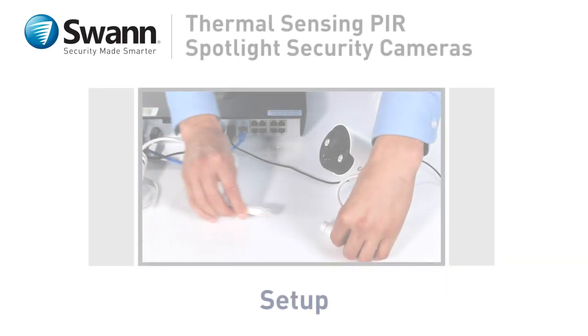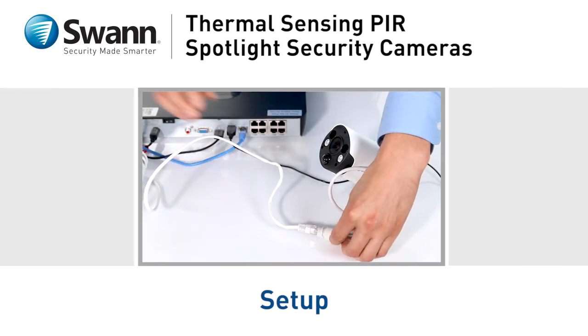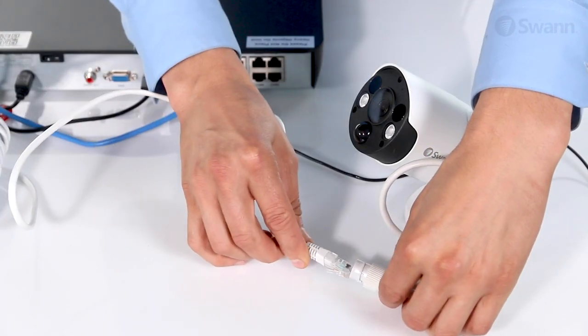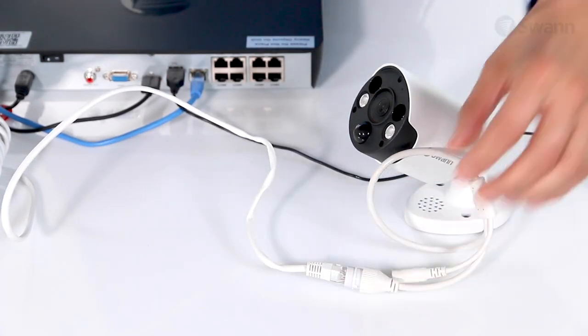In this segment, we'll show you how to connect your new Swann Spotlight Extra Security Camera to your NVR. To connect the camera to your NVR, connect one end of the Ethernet cable to the camera.